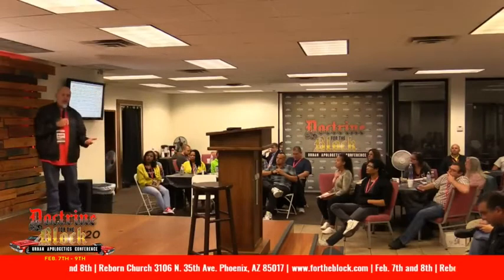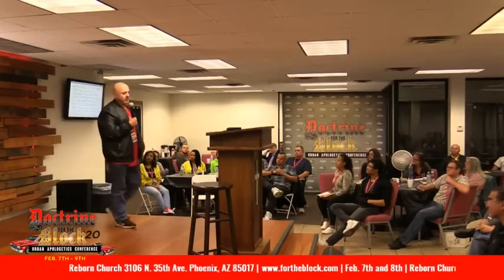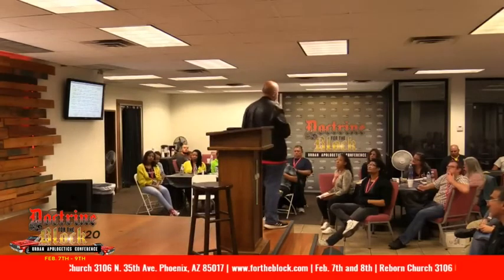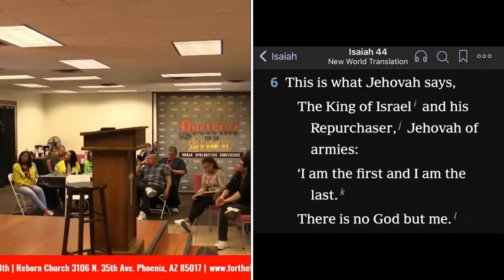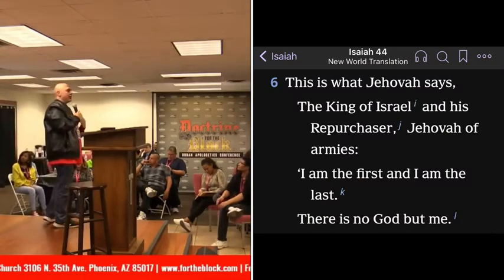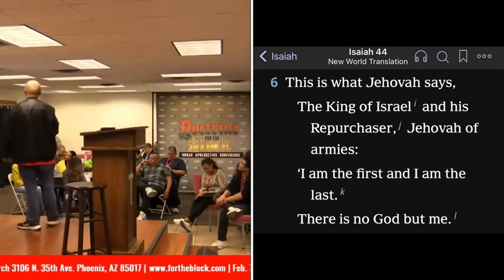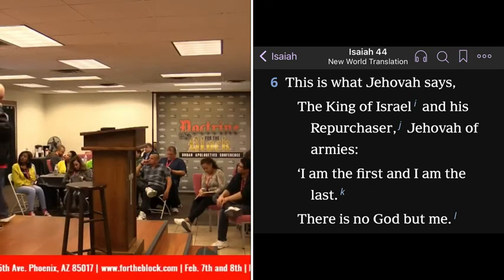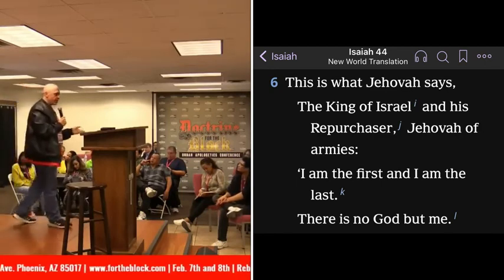Now, how do I use their Bible — their perversion — to my advantage? Let's go to Isaiah 44:6 in their translation. 'This is what Jehovah says, the king of Israel, his repurchaser, Jehovah of armies: I am the first and I am the last. There is no God but me.' And Isaiah 48:12: 'Listen to me, O Jacob and Israel, whom I have called. I am the same one. I am the first; I am also the last.' So who's the first and the last? Jehovah.